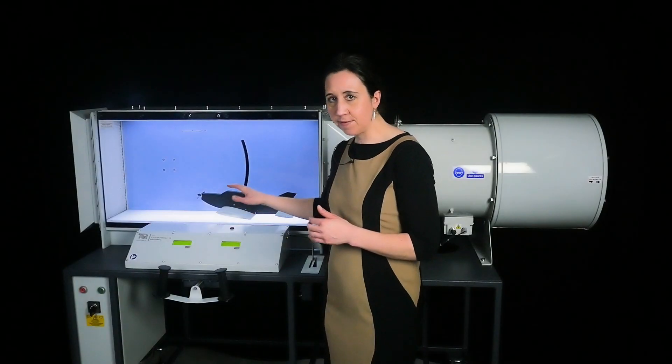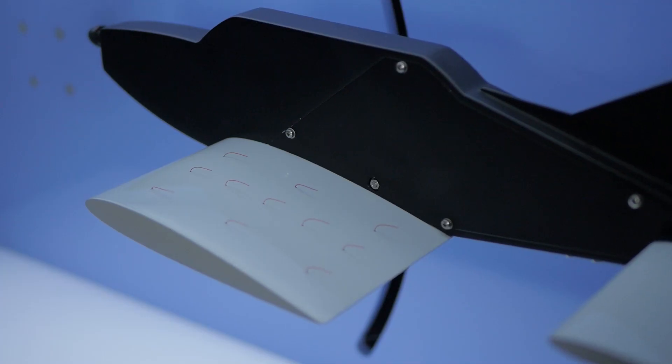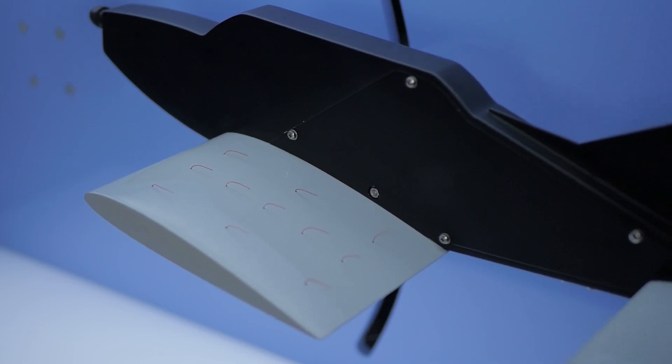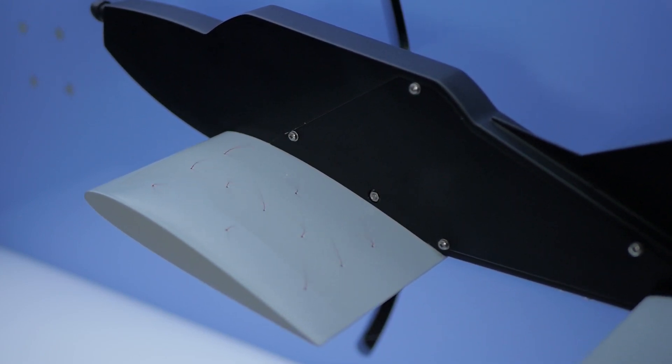These small tufts that cover the port wing of the model aircraft show the direction and quality of airflow over the wing surface, making it easier to see separation and stalling.